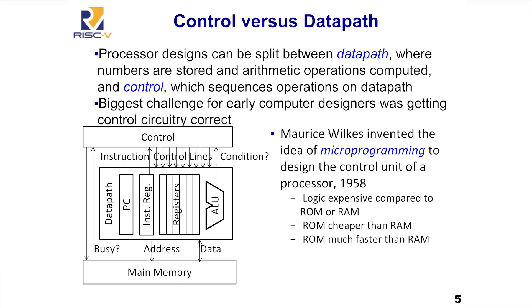Back then, as today, there are two parts to a computer: the processing part — the brawn — and the control — the brain that tells it what to do. The hard part of designing a processor is designing the control. With all these different price points, IBM needed to figure out how to do control for the cheapest and most expensive designs. Maurice Wilkes of Cambridge had the idea that control could be like programming — specified in memory — and he called it microprogramming. He published that idea in 1958.